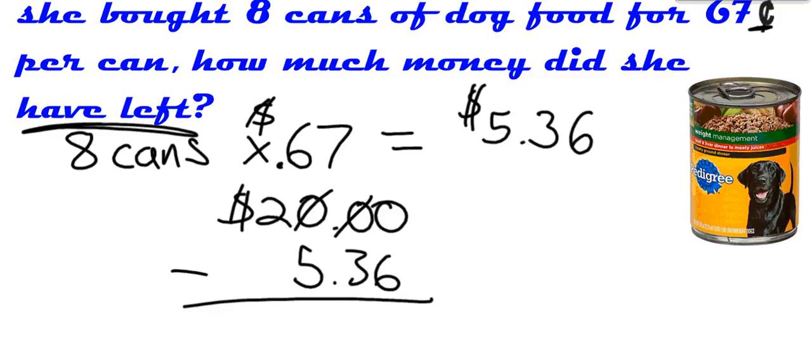All right, I've got to borrow. I've got to borrow. Boom. This becomes a 9. This becomes a 9. This becomes a 10. You know how to do that. That should be super simple. All right? Decimal went straight down. Should have $14.64 left. Do you agree with me that I do my math right?